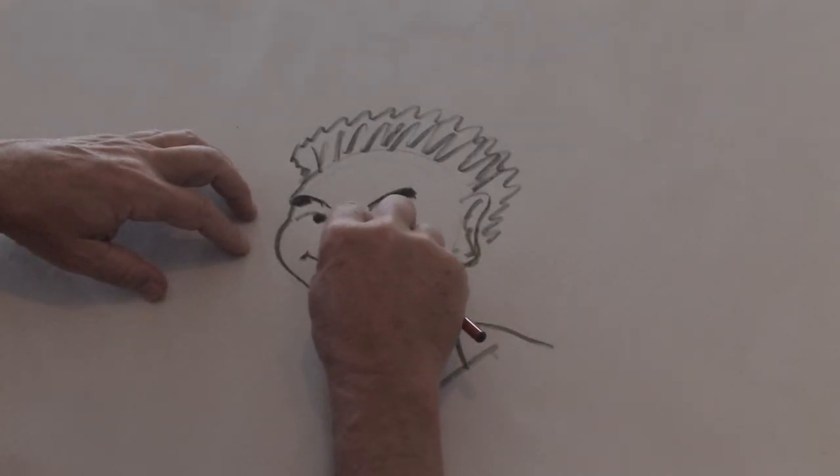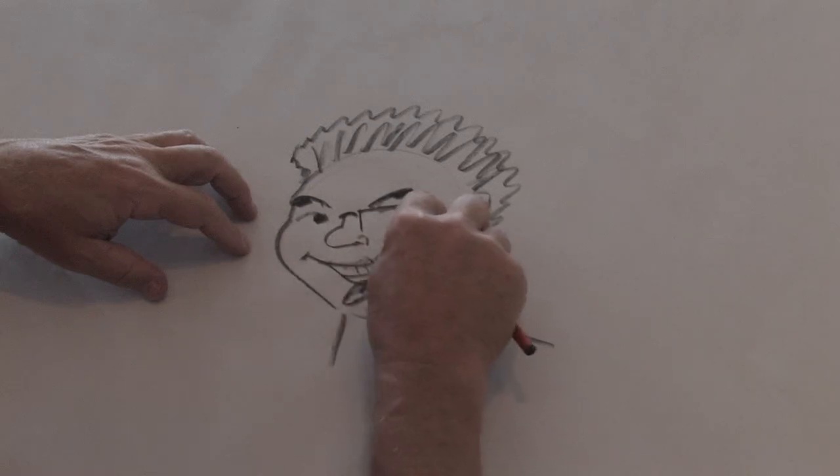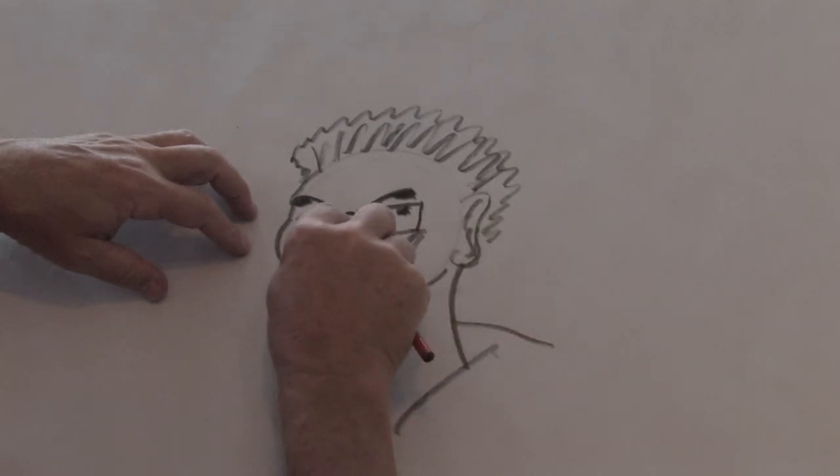We'll start off by putting some eyeglasses on him. And right at the top of the nose, we'll put a little round clip, and then we'll focus those glasses over the eyes.